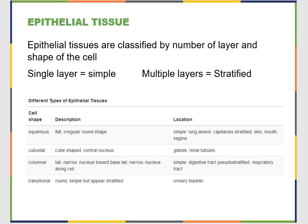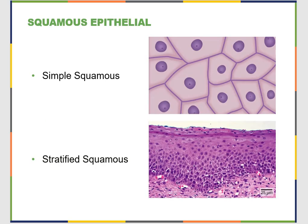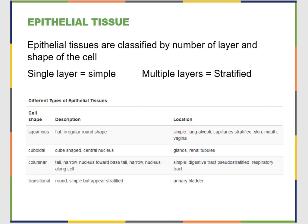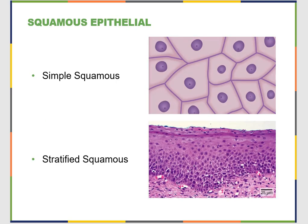Looking at epithelial tissue, we describe it by the number of layers of cells and the shape of the cell itself. Epithelial tissues can exist in just one layer — called simple — or multiple layers, called stratified. One cell shape is squamous: flat with a kind of irregular round shape, not necessarily squares. Squamous cells can exist as a single layer, like what's on the inside of your cheek, or as stratified squamous cells — your skin is an excellent example.